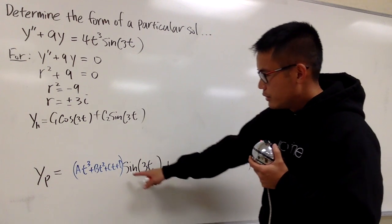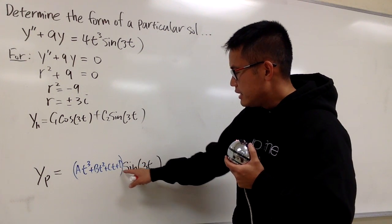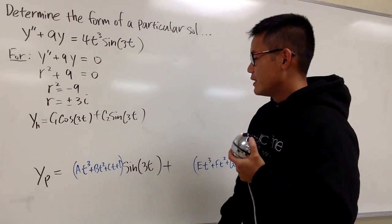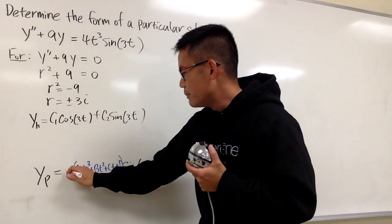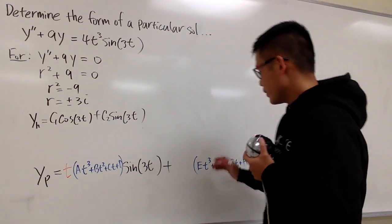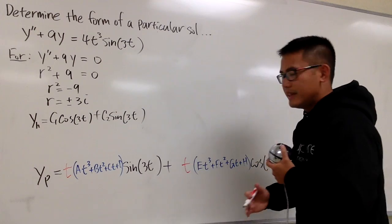This is how you fix. You see, at the end right here, this is d sine 3t. That will kind of match with this, right? Well, the fix is that I'm just going to multiply this by t. Likewise, we also need to multiply this by t. And that will do the work.